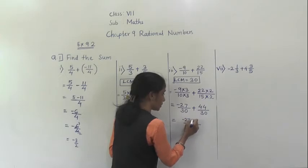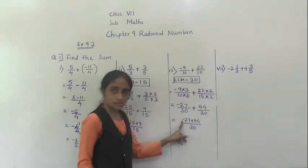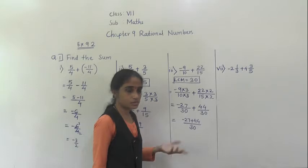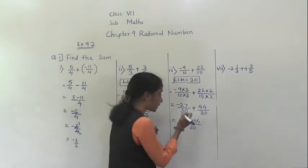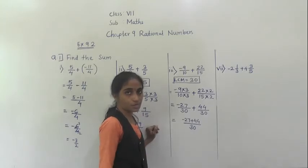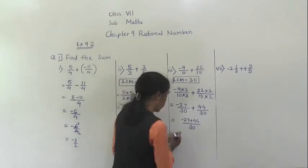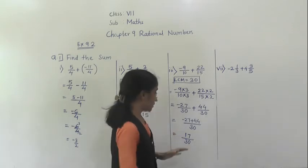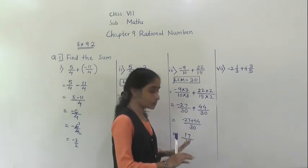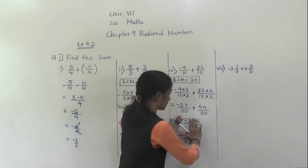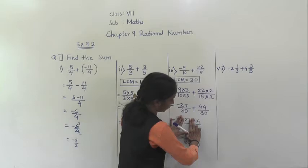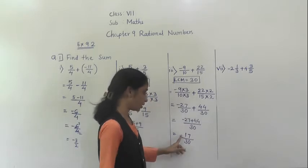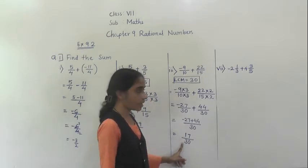So we have minus 27 plus 44. This number is negative and this number is positive, so minus plus gives minus. We subtract 27 from 44. Hide the sign and check which is greater: 44 is greater, and 44 has positive sign, so for the answer also positive sign. Answer is 17 upon 30.